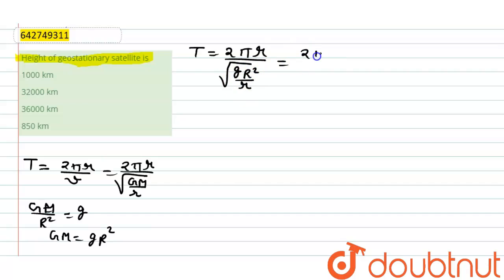It can be written as 2 pi r divided by capital R root r divided by g. Or we can write it as 2 pi divided by R root r square divided by g.